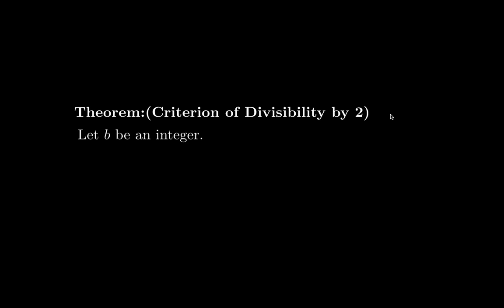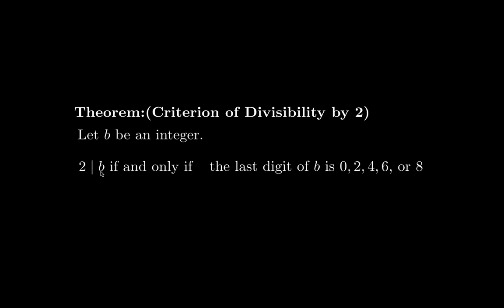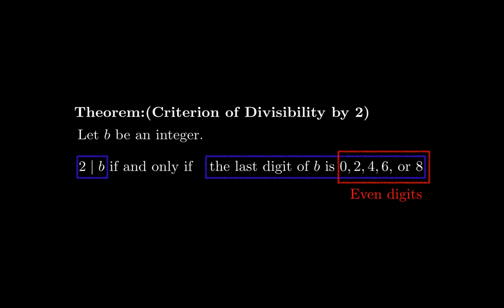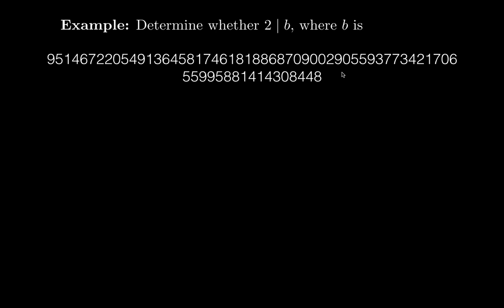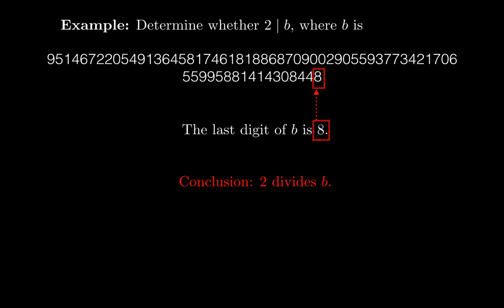The criterion for divisibility by 2: 2 divides a number B — we call B even — if and only if the last digit of B is 0, 2, 4, 6, or 8. These are the even digits. So a number is divisible by 2, or even, if its last digit is even. That's easier to check — we don't have to add anything, just look at the last digit. For example, if the last digit is 8, and 8 is an even digit, then 2 divides B.